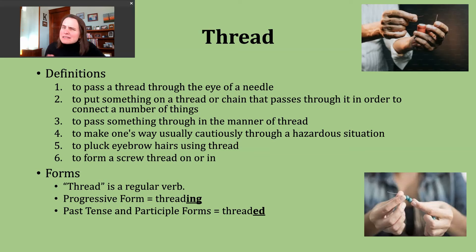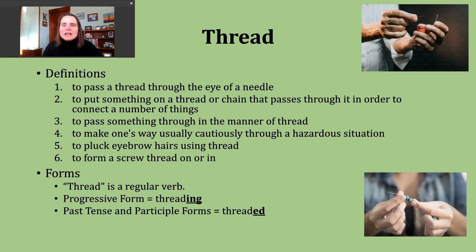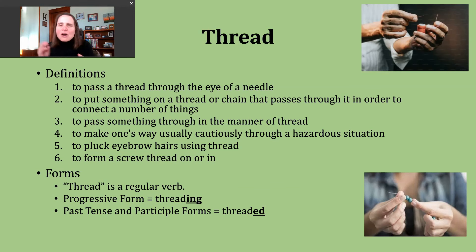Now we're going to move on and talk about some slightly different ways to use this verb. The fourth way people use the verb thread is to mean to make one's way in a cautious way through some type of hazardous or dangerous situation. I see this verb used many times to talk about really difficult negotiations going on between different parties within a government, where they're trying to be very cautious around issues causing great disagreement or polarization, thinking about how they're going to navigate the difficult situation.